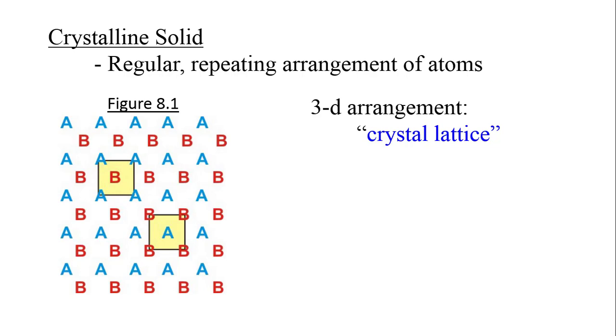Note the top yellow box in the figure with four A's surrounding a B. If you were to translate this one spot to the right, you would again find four A's surrounding a B.